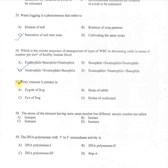Question 57: Gray crescent is present in — A: zygote of frog, B: brain of rabbit, C: eye of frog, D: retina of cockroach. Option A — zygote of frog — is correct.